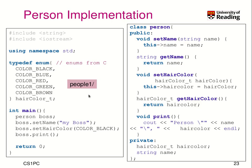Let's have a look at a more detailed implementation. We can use an enum, like we know from C, with different hair color values: black, blue, red, green, brown. We declare a new data type, hair color type. Now we create a person 'boss', set the name to 'my boss', give him hair color black, and print this person. The getters return the private data members and setters set them. This code works pretty seamlessly.